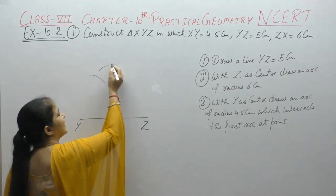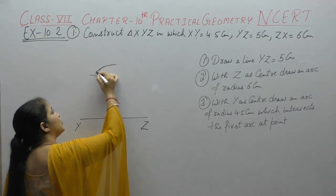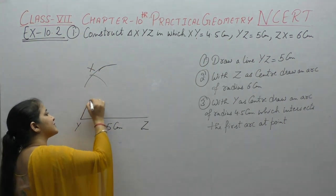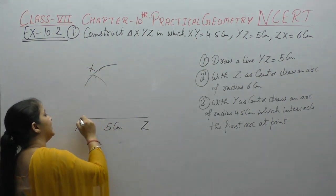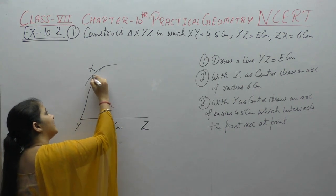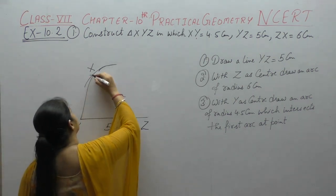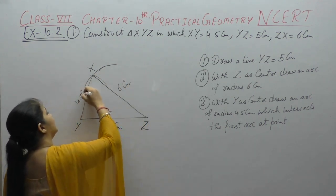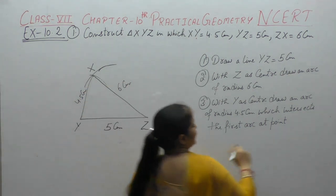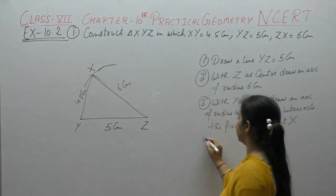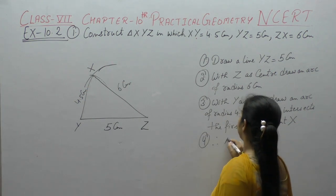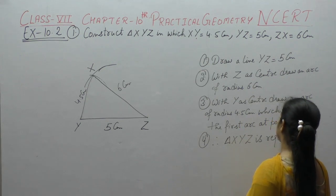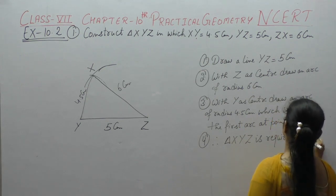Z से रखके 6 cm की compass open करके इस arc को extend कर दीजिए। यहाँ पे यह दोनों arcs intersect होंगी, उस point को नाम देंगे X। Triangle XYZ में यह 6 cm और यह 4.5 cm है — यही हमारी required triangle X Y Z है।